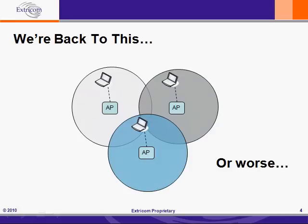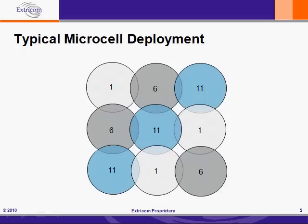In this video, I am going to talk about how Extracom's channel blanket technology eliminates co-channel interference and yields vastly improved throughput in comparison to the microcell architecture. We'll focus on the 2.4 gigahertz band, and in a subsequent video, we'll take a closer look at the 5 gigahertz band. The cause of co-channel interference in our microcell example was the need to repeat the channels in order to cover the area with wireless LAN.